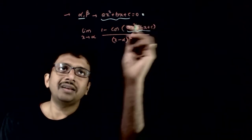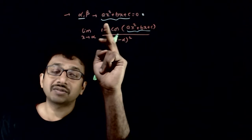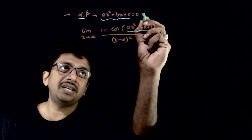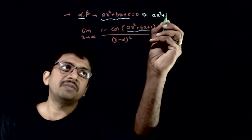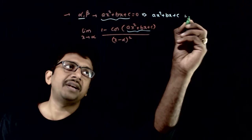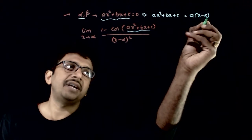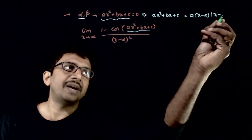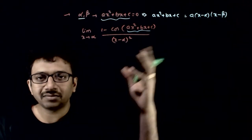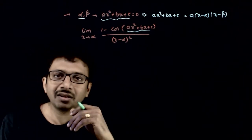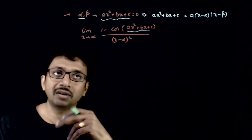We know that if alpha and beta are the roots of ax² + bx + c, then ax² + bx + c can be written as a times (x minus alpha) into (x minus beta). This comes from the theory of quadratic equations.